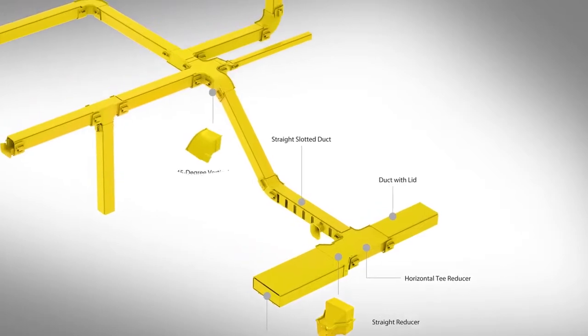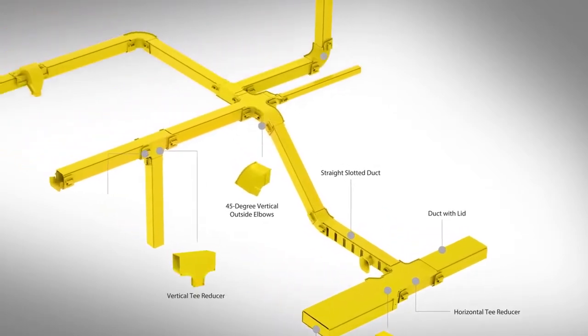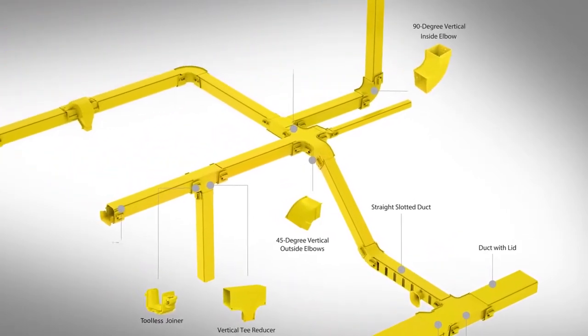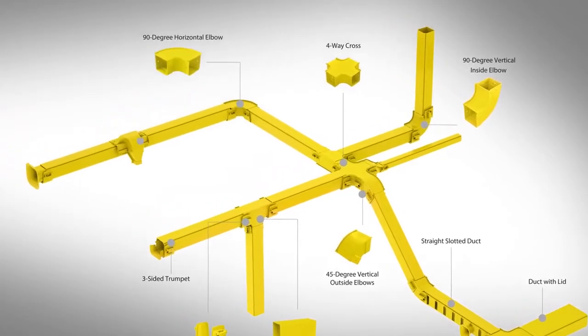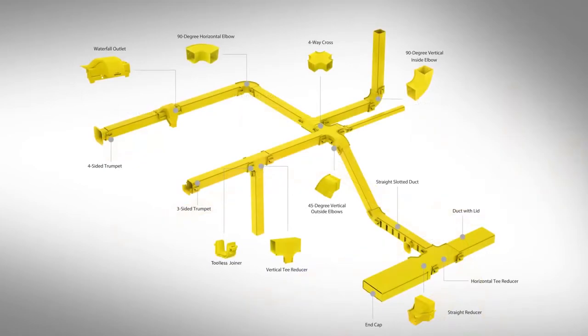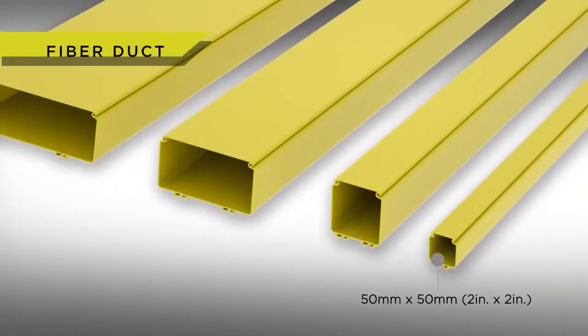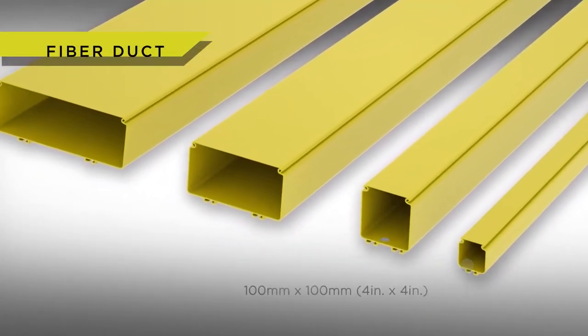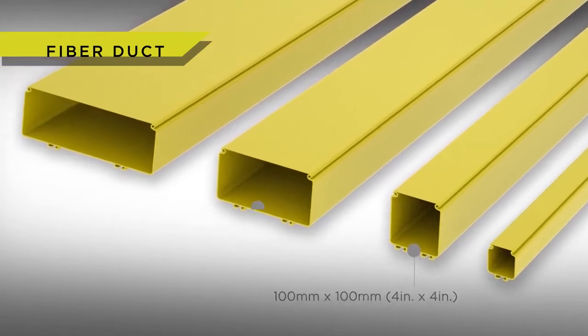Straight duct, elbows, tees, crosses, reducers, and innovative outlets are all designed to help you meet the needs of your data center space. Available in a range of sizes, the ducting provides a more secure, reliable, and effective alternative to traditional fiber routing solutions such as wire basket tray.